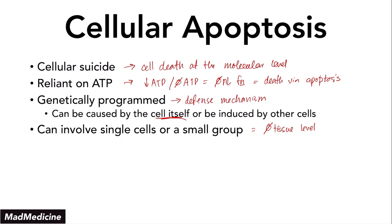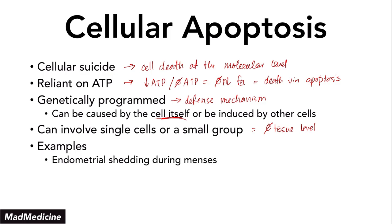Examples of apoptotic mechanisms include: first, the endometrial lining during menses. The endometrial lining sheds during the menstrual cycle because there is no implantation of a fertilized egg in the uterus. Because there is no implantation, there is no need for that endometrial lining to remain hyperplastic or hypertrophic, so the female body causes apoptosis to occur. A key question often asked is: what is the mechanism of endometrial lining shedding during the menstrual cycle? The answer is apoptosis.